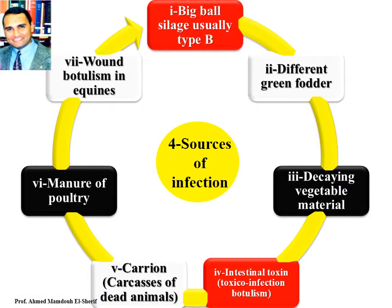Sources of infection: 1. Big bale silage usually contains Botulinum type B. 2. Different green fodder. 3. Decaying vegetable material. 4. Intestinal toxin — toxico-infection botulism. 5. Carrion and carcasses of dead animals. 6. Manure of poultry. 7. Wound botulism, found in equines.